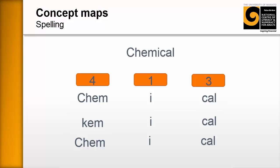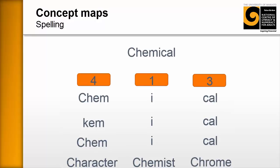And usually other learners will know that. And then once we've got the CH, which is the part of the word they might have had difficulty with, then I just link that to a couple of other words that also begin with the same letter combination, have the same sound, character, chemist, chrome, and so on.